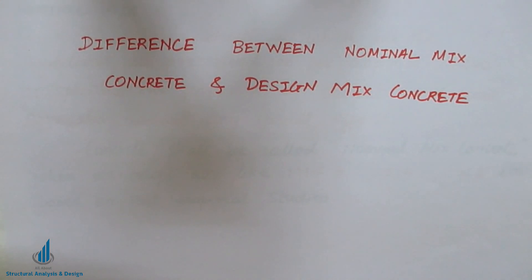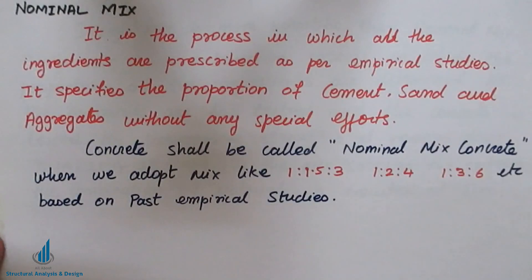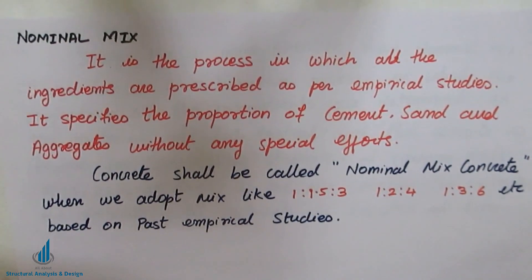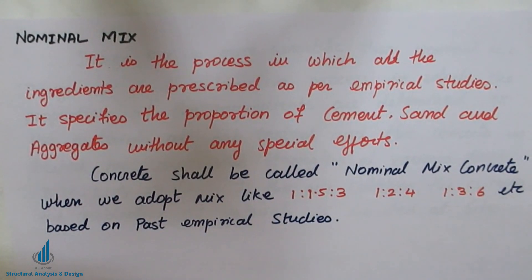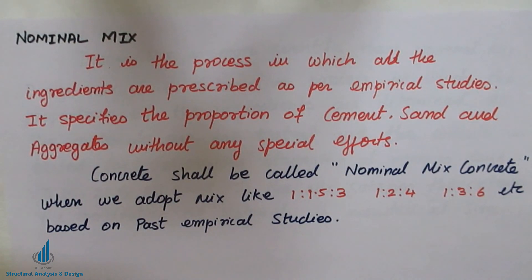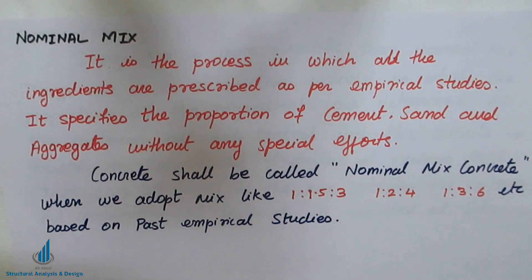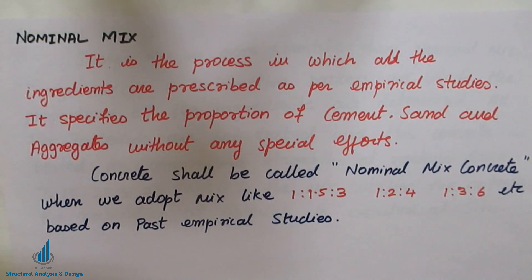Concrete is the mixture of ingredients — cement, sand, coarse aggregates, and water. When all these ingredients are mixed thoroughly, we get good quality concrete. The question is: what quantities of these materials are needed? This leads us to nominal mix. Nominal mix is the process in which all ingredients are prescribed as per empirical studies. It specifies the proportion of cement, sand, and aggregates using pre-determined mixes like 1:1.5:3, 1:2:4, or 1:3:6.